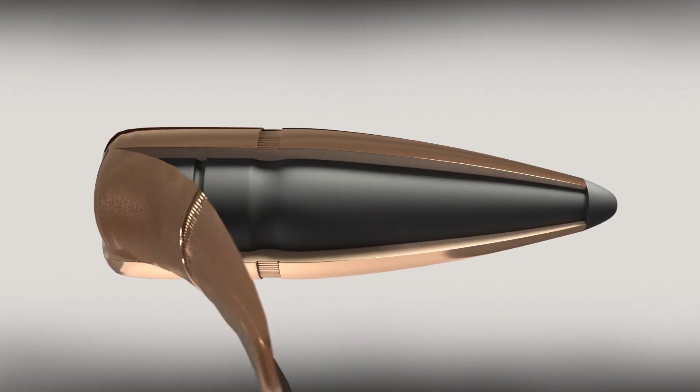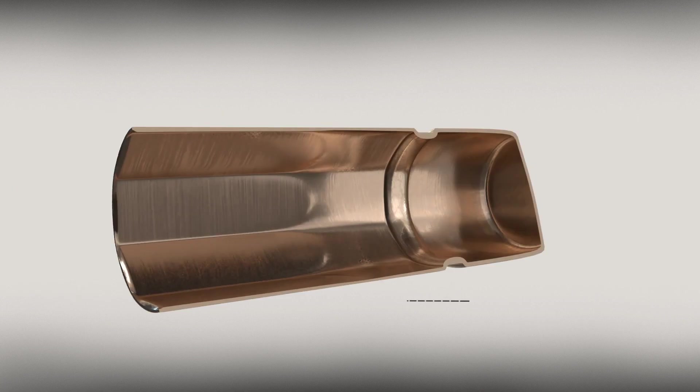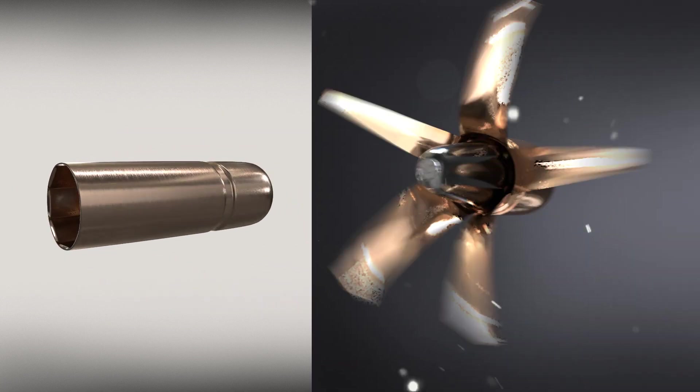A tapered jacket aids expansion at reduced velocity yet controls expansion at high velocity, while inner grooves strategically weaken the upper section of the jacket to help initiate expansion.